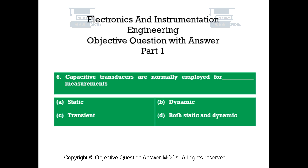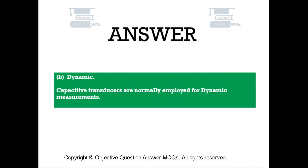Question number 6. Capacitive transducers are normally employed for dash measurements. Option A: Static. Option B: Dynamic. Option C: Transient. Option D: Both static and dynamic. The right answer is Option B — Dynamic. Capacitive transducers are normally employed for dynamic measurements.